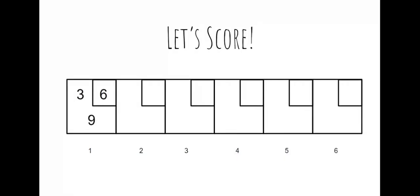Let's do some scoring. I've already added my first frame. On my second turn, my first roll I get one pin down, so I put a one in the upper left hand corner. Then I take my second roll and get five more pins down, so I put a five in the upper right hand corner. To add up my game total, I take my score of nine from my first frame and add it to my second frame: nine plus one plus five equals 15, so 15 is my game total so far.